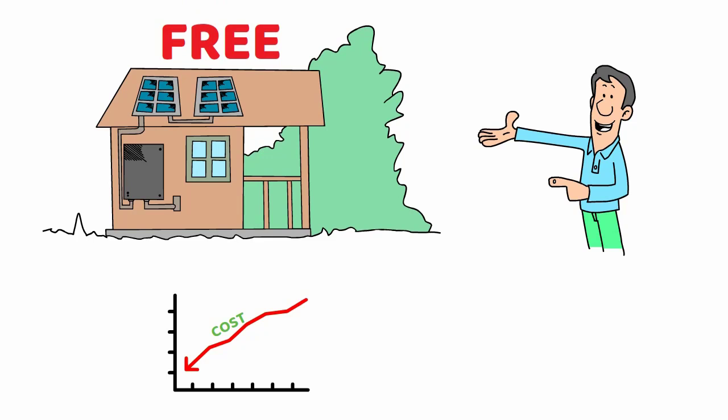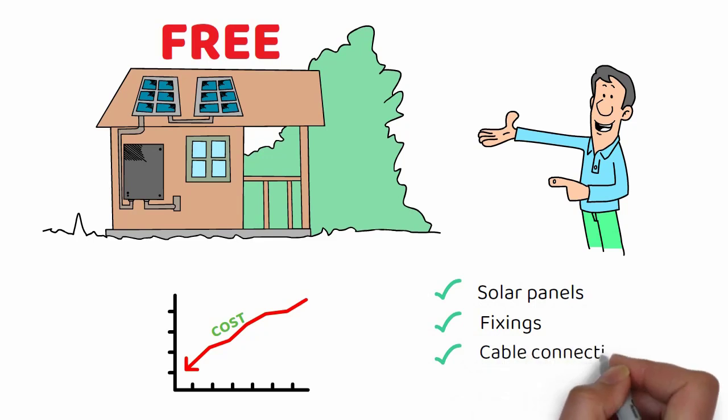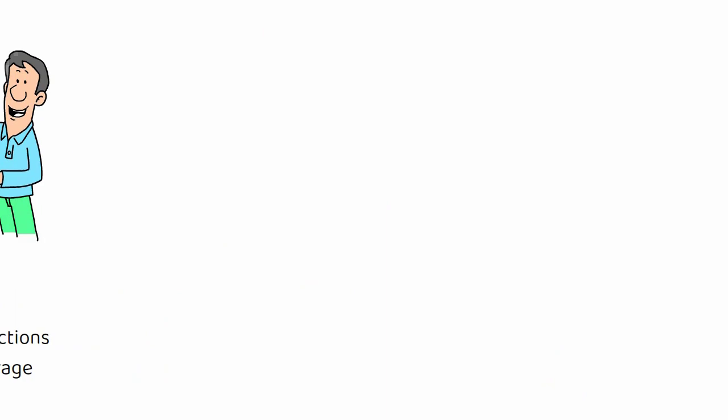SunSync have come up with a complete all-in-one solar system that includes solar panels, fixings, cable connections and battery storage. Within each waterproof casing is an efficient inverter that can provide both DC and AC power. Everything is plug and play.